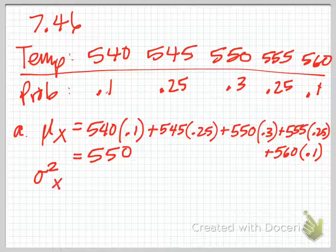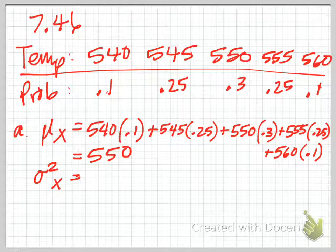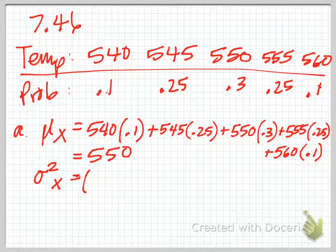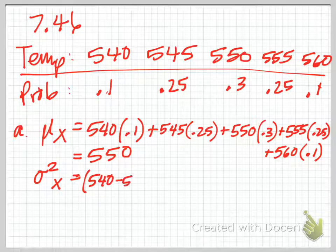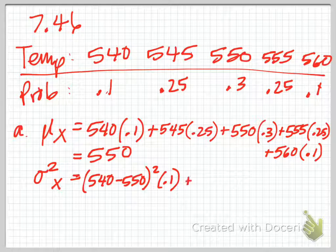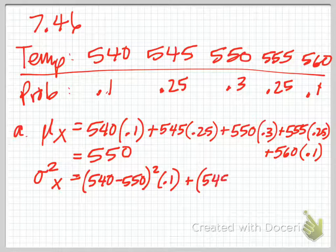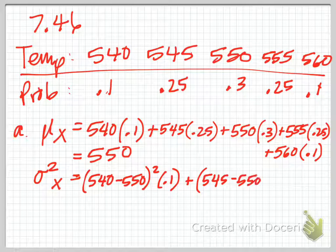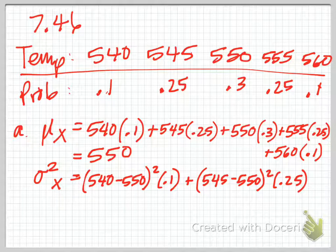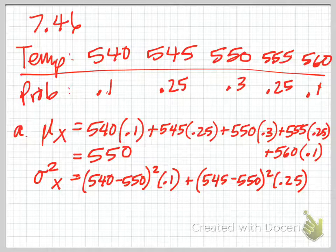That came out to 550 exactly when I did it. Remember the variance squared? I'm pulling this exactly out of the summary on page 426 if you needed to skip over and look. You take that number, take each outcome in the probability distribution, subtract it from the mean, square that, and then multiply it by the probability. So like for the first one, we'll do 540 minus 550 squared times 0.1, plus 545 minus 550 squared times 0.25. I'm going to finish setting that up and then calculate it.